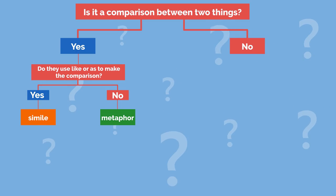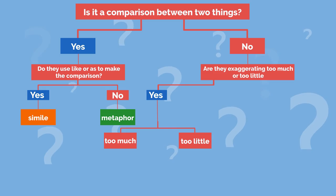However, if they are not making a comparison between two things, you should ask yourself this question: are they exaggerating too much or too little? If it's too much, you know that they're using hyperbole. If they're saying too little, you know that they're using an understatement.